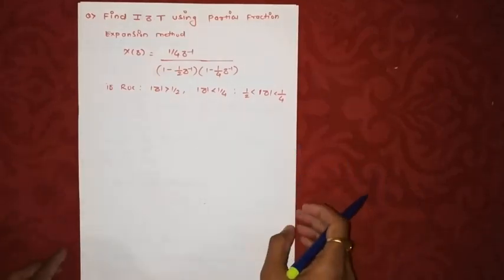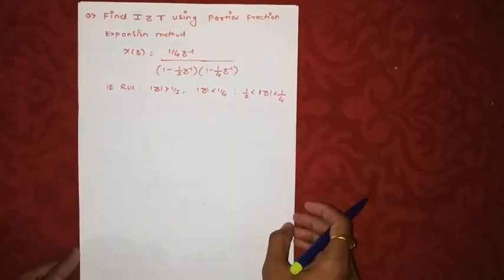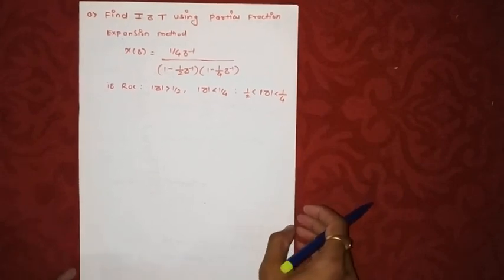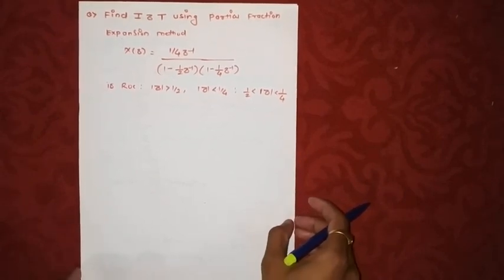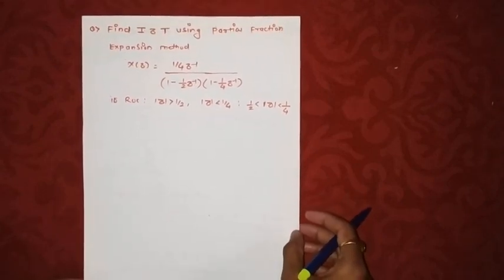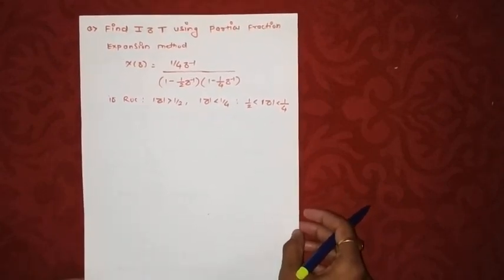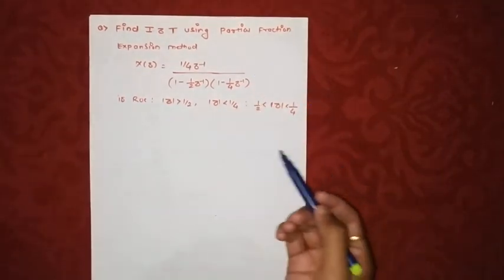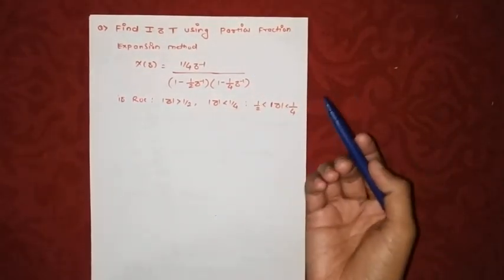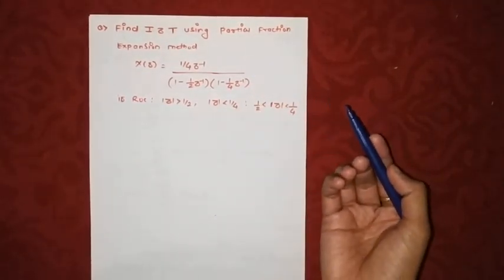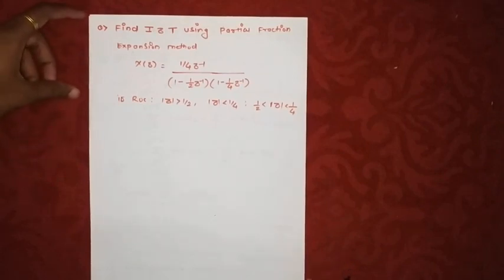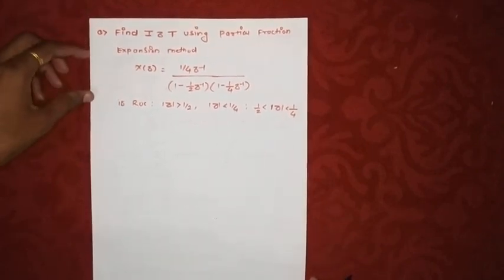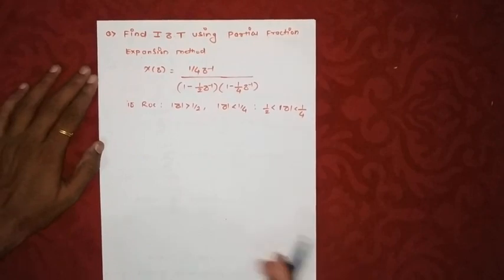Hello friends! In this segment we will discuss how to find the inverse Z-transform using the second method, called the partial fraction expansion method. All of us are aware of this method. We will apply the same concepts and try to find IZT, that is X(n).